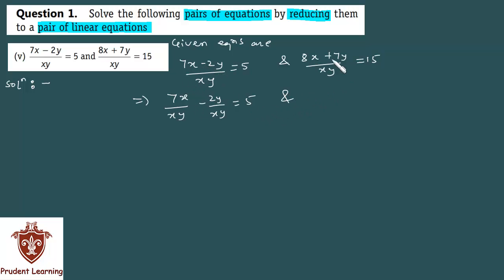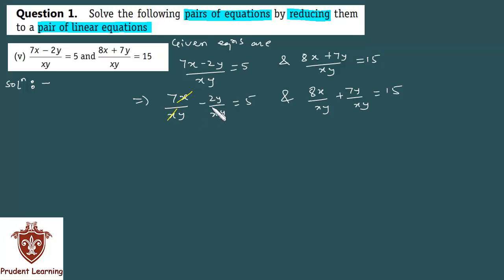7x over xy minus 2y over xy is equal to 5. When you take LCM, you will reach this equation. Here the x-x terms cancel and y-y terms cancel, so this equation will simplify.